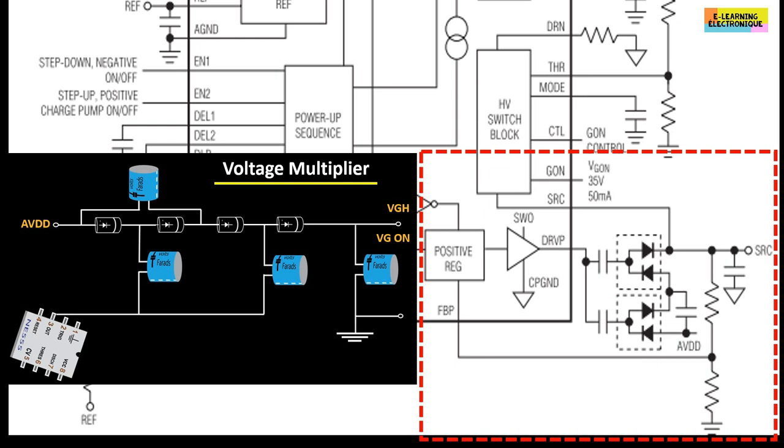The voltage VGH, called here VG-on, has a much higher value compared to that of VGL. The latter was minus 6 volts. In this example, VGH is 35 volts but with a low amperage of 50 milliamps. As mentioned earlier, it is from AVDD that the voltage VGH is produced.